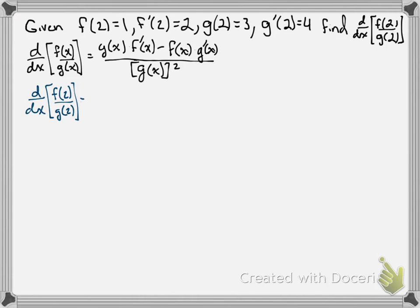So we have g of 2 times f prime of 2 minus f of 2 times g prime of 2 all over g of 2 squared.